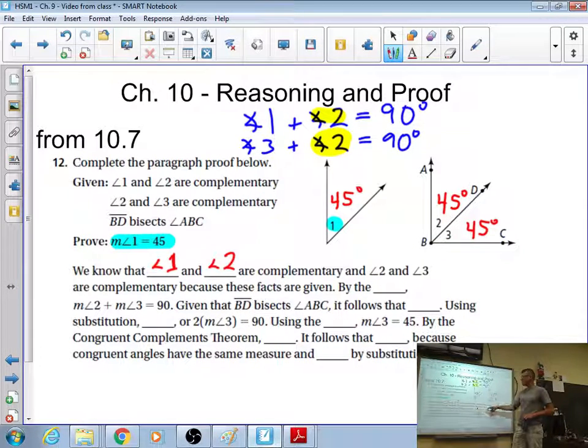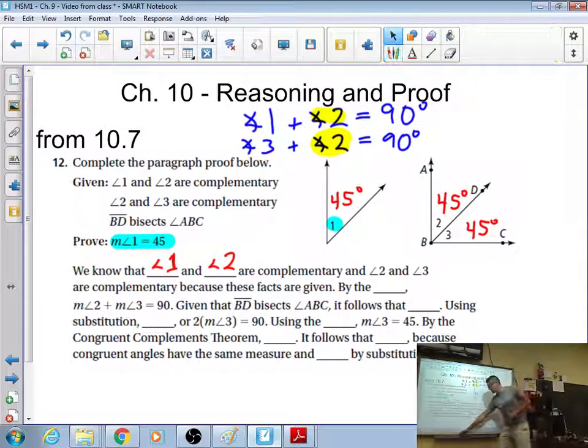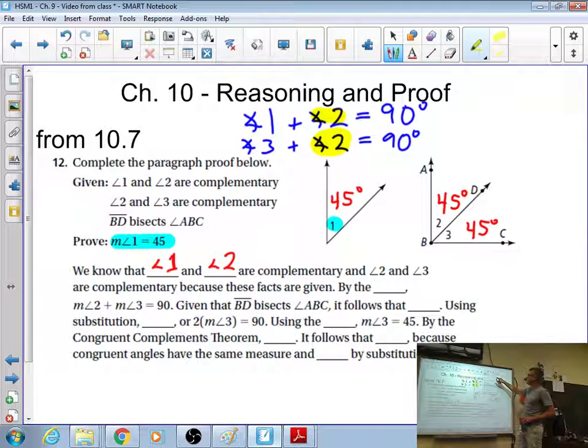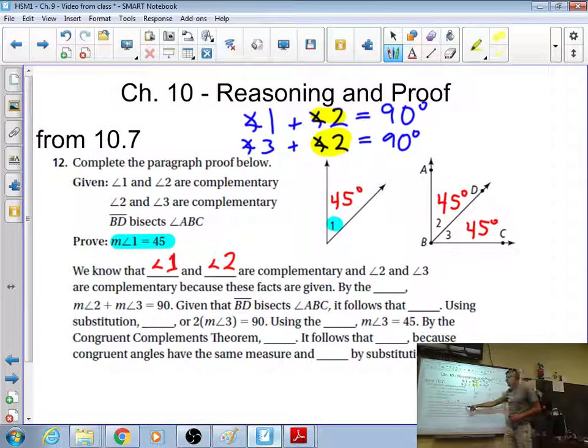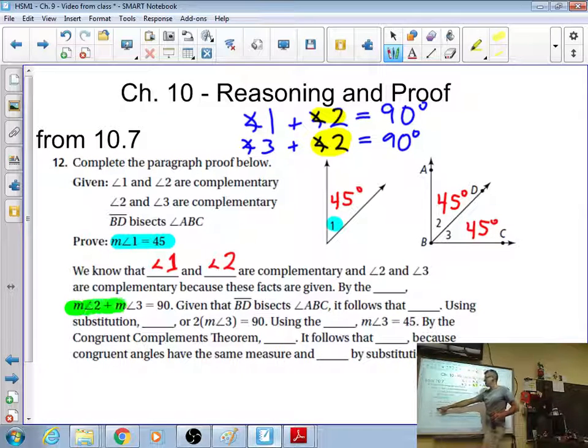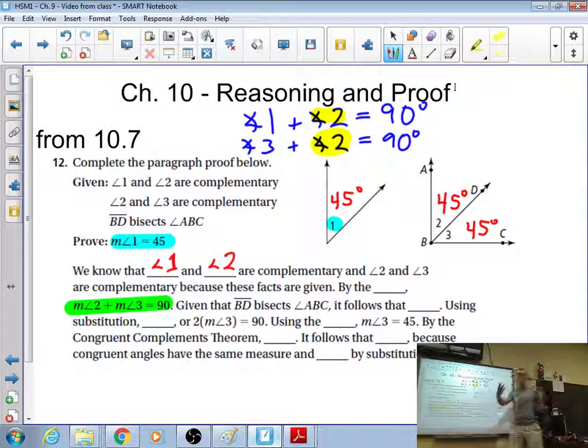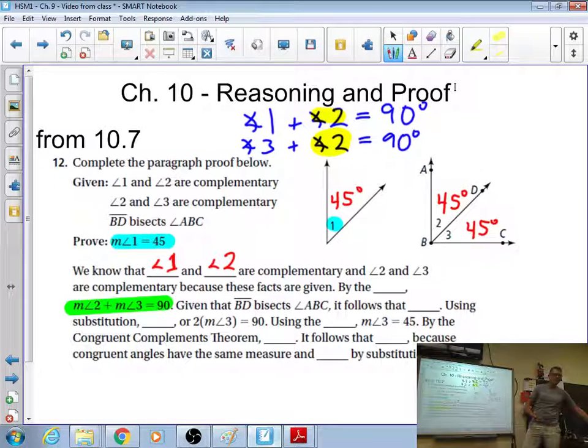Because these facts are given, then, by the something, angle 2 plus angle 3 equals 90. Now, if they're now laying out that angle 2 and angle 3 equal 90, where do you think they got the idea that angle 2 and angle 3 equal 90?